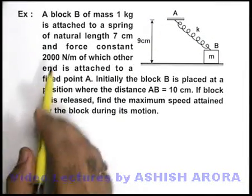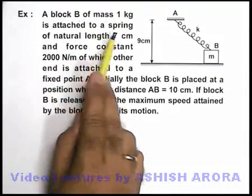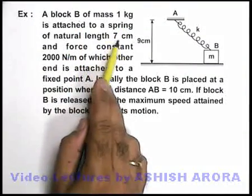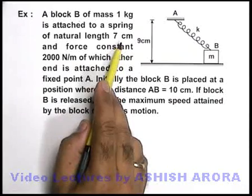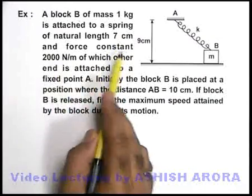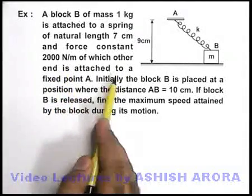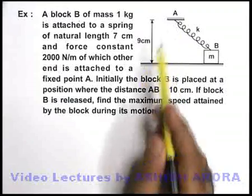In this example, we are given a block B of mass 1 kilogram, which is attached to a spring of natural length 7 centimeters and force constant 2000 newton per meter, of which the other end is attached to a fixed point A. We can see this in the figure.